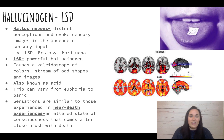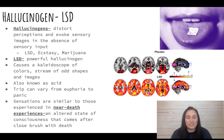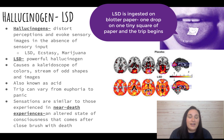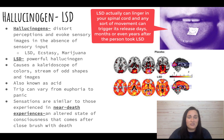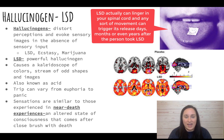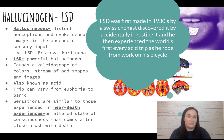Moving on to hallucinogens — LSD, ecstasy, and marijuana are the three to know. Hallucinogens distort our perception and evoke sensory images or the absence of sensory input. LSD is the most powerful of the three, causing a kaleidoscope of colors and odd shapes. Originally made for possible medical use, it became recreational. Governments were so concerned about its power that it is now a Schedule I (Category 1) drug in the United States — the most restrictive level.